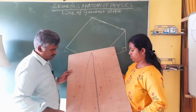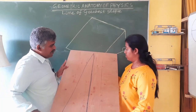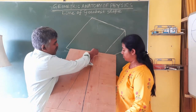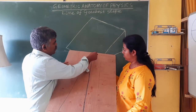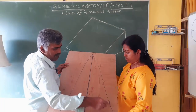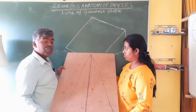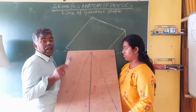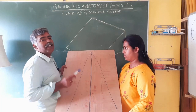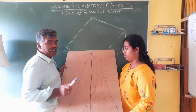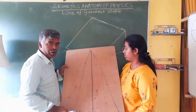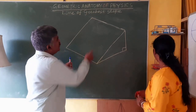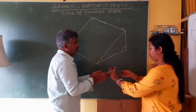Now if I tilt it like this and release the ball, the ball goes like this. So how shall I geometrically specify which will be the exact line? That is the line of greatest slope which I want to discuss. Let me go to the board and explain exactly what is happening.